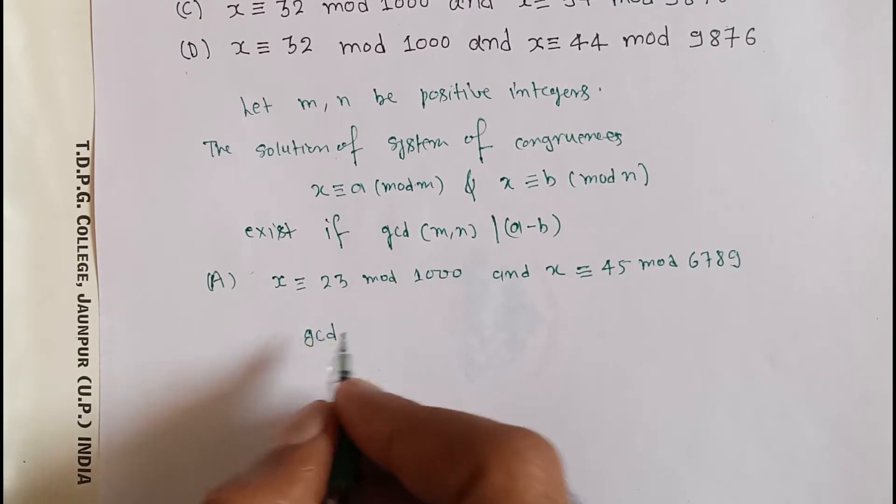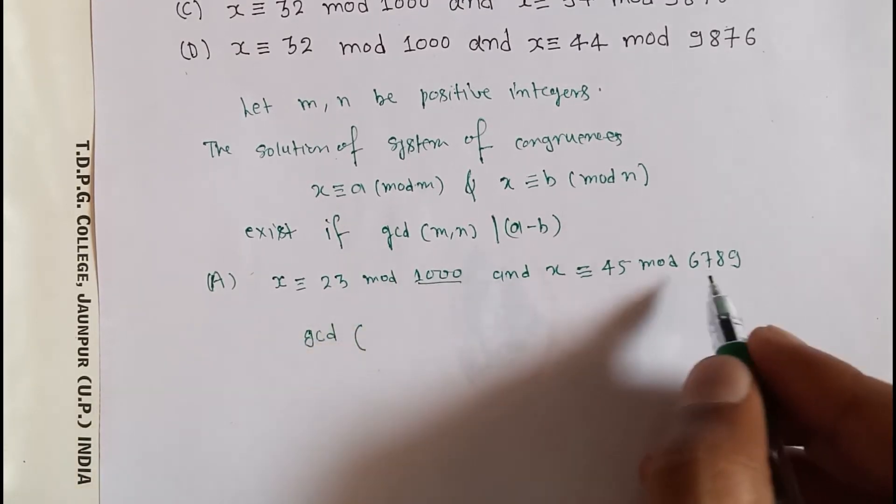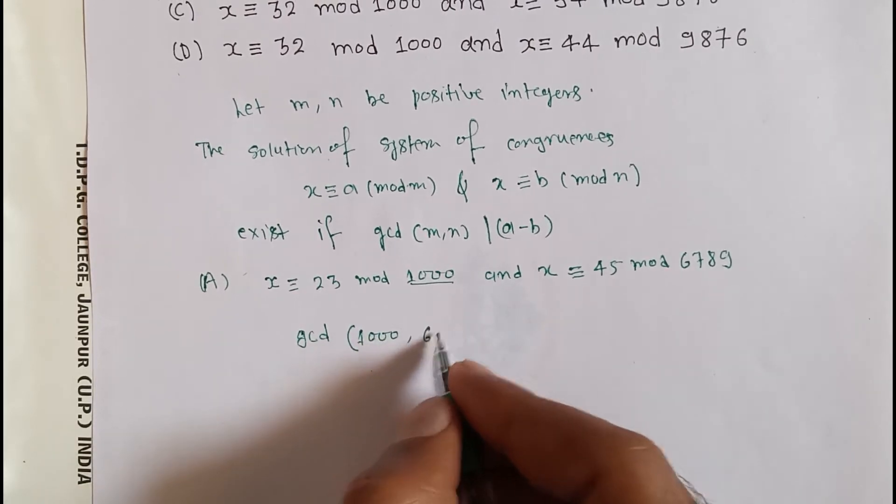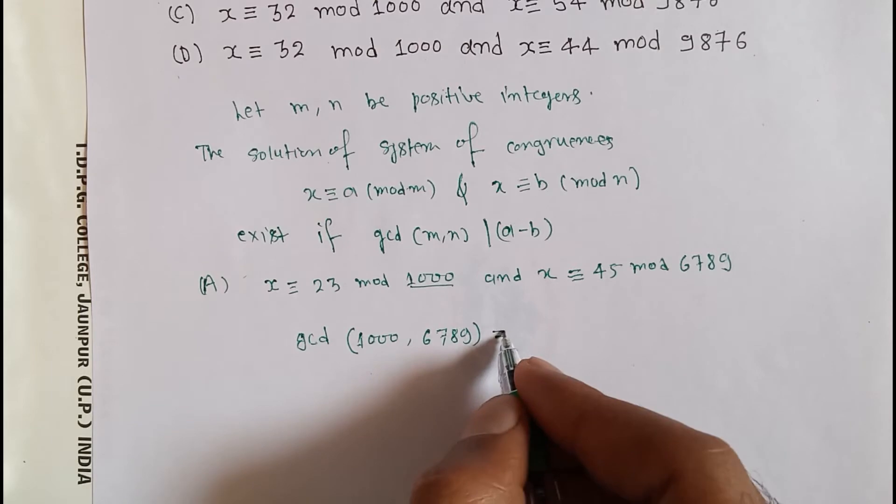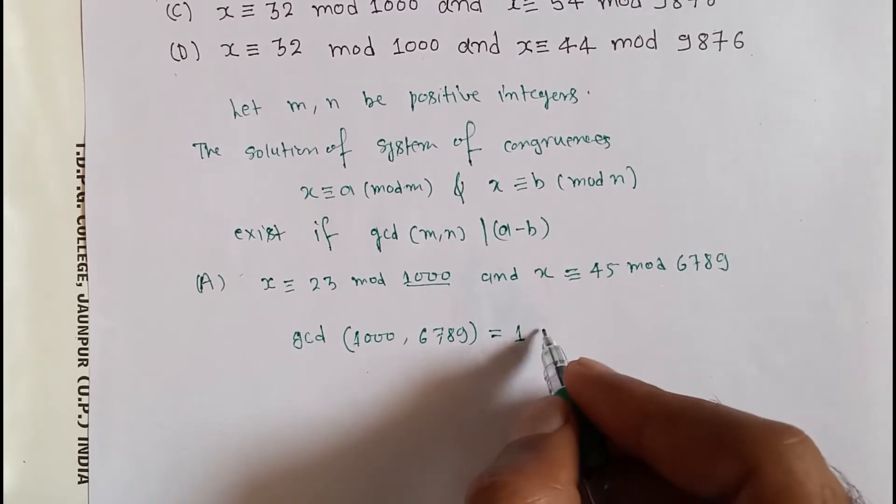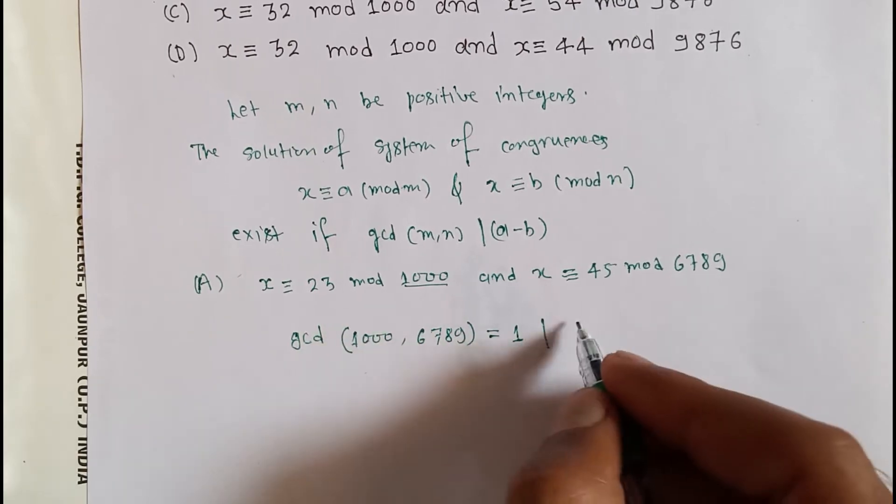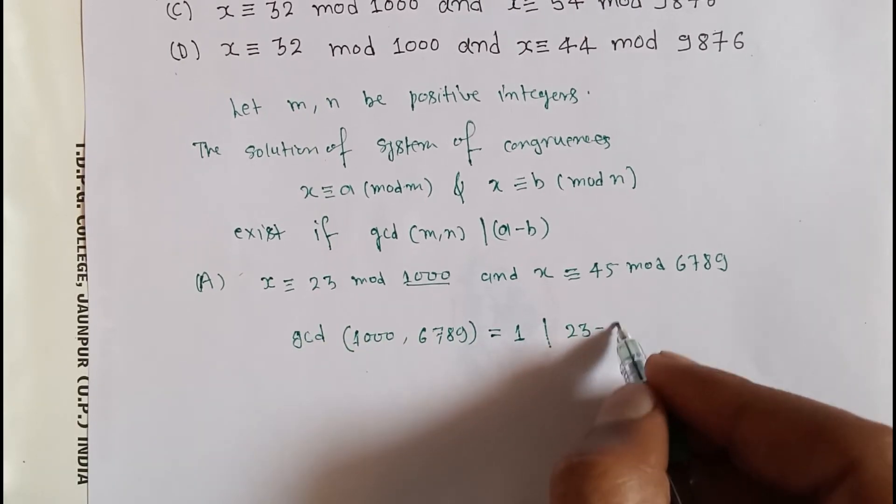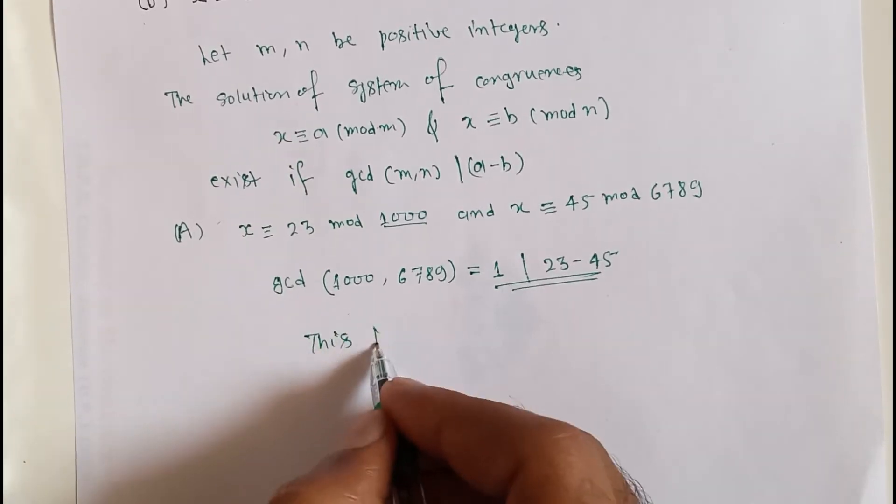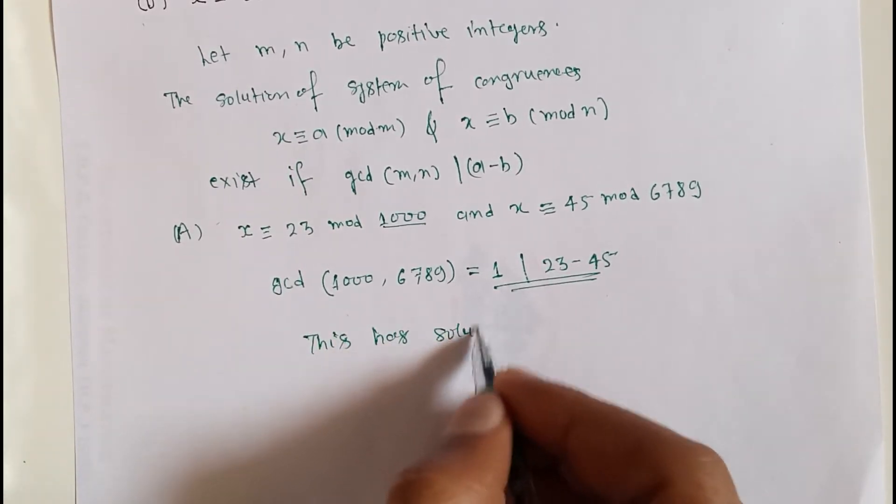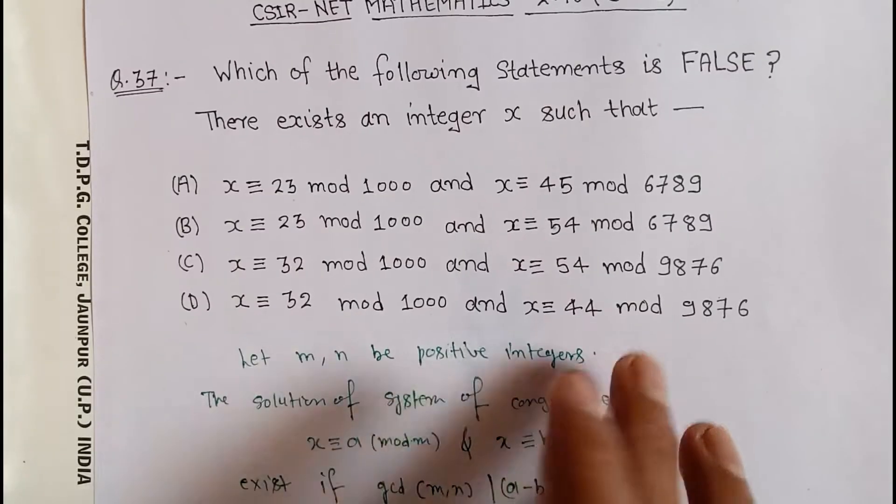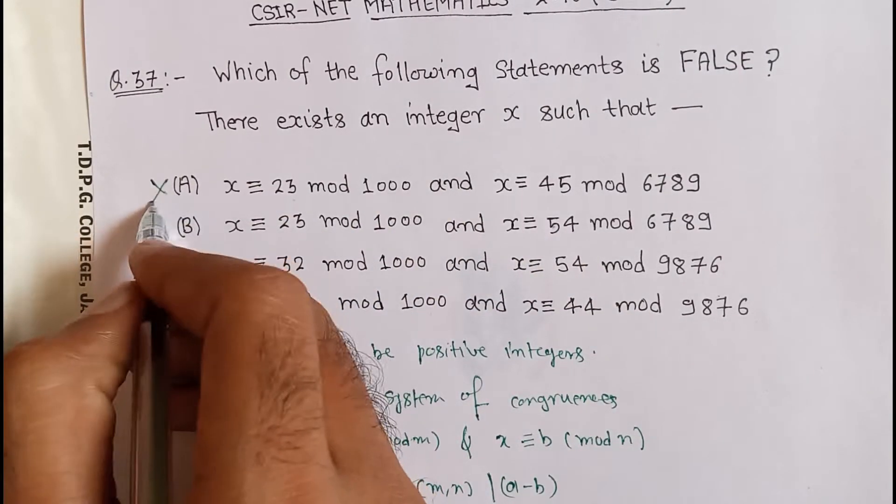Here, the greatest common divisor of 1000 and 6789 is equal to 1, and 1 divides 23 minus 45. This system has a solution, so this option is not correct.